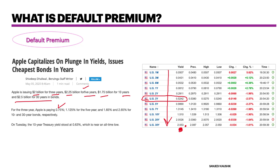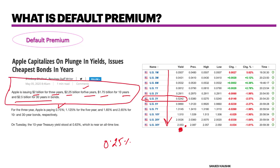So Apple is paying a default premium of 0.25% — still 0.75%, not bad. That's why Apple sold so many bonds to raise capital. And this is a company with roughly $180 to $200 billion in cash on its books, yet they wanted to raise more money because even by borrowing at these prices, they can generate higher returns for shareholders.